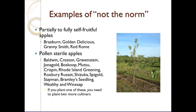There are exceptions to the norm. Some apples are considered partially to fully self-fruitful — Braeburn, Golden Delicious, Granny Smith, and Red Rome are all partially self-fruitful, meaning one tree can produce fruit. But in almost all cases, even those considered fully self-fruitful can almost always improve fruit set by having a second cultivar. Even in blueberries, though a second cultivar isn't absolutely required, it's generally better to have one to improve pollination.